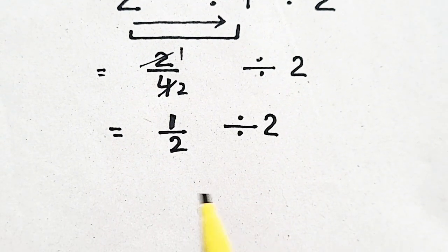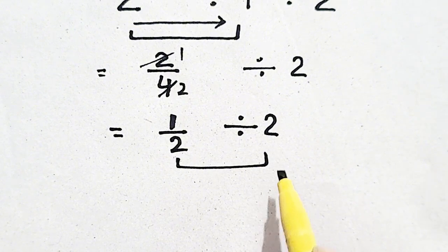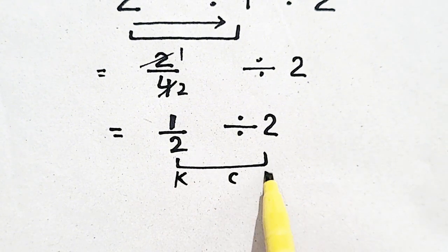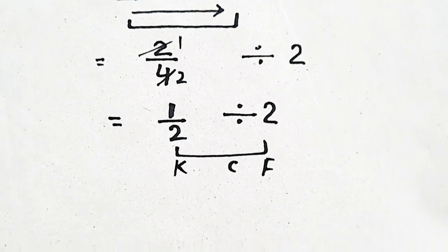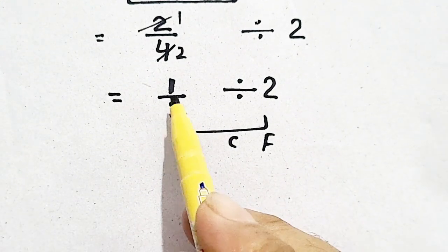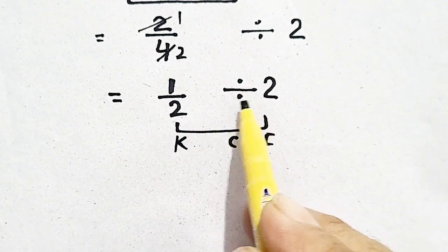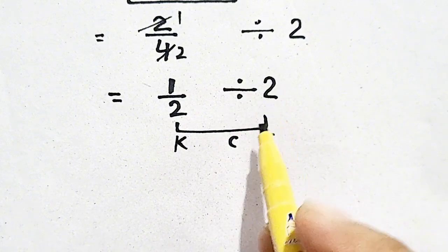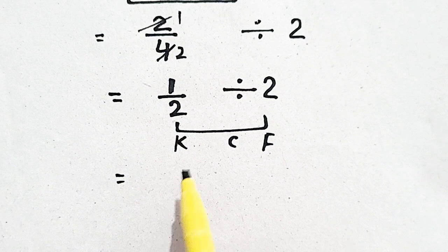So apply KCF rule. What is KCF? K means keep it, C means change the division into multiplication, and F means flip the 2. So apply this rule.